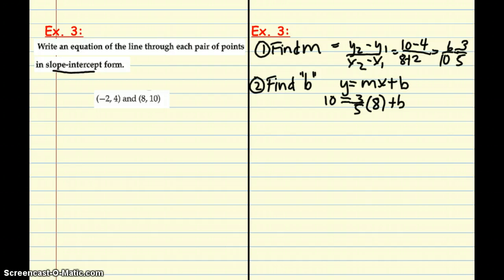First thing that we need to do is multiply 3 fifths and 8. Quick reminder, you put a 1 underneath the whole number. So, I have 10 equals, 8 times 3 is 24, 5 times 1 is 5, plus b. I'm going to leave it as 24 fifths.